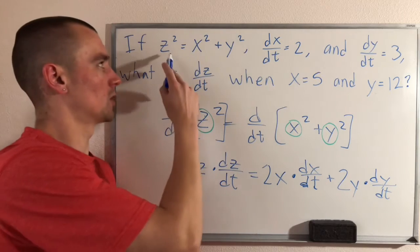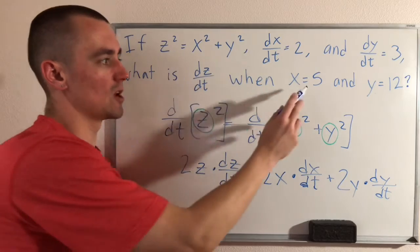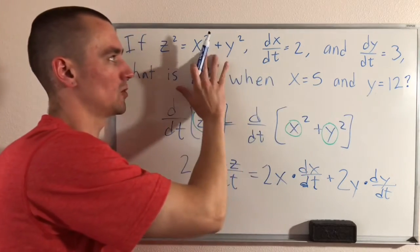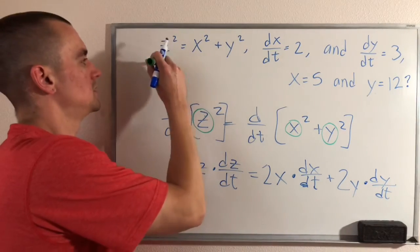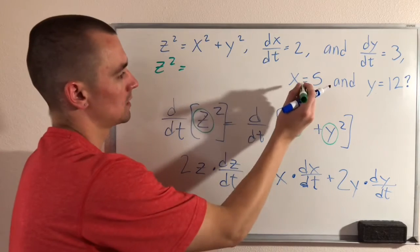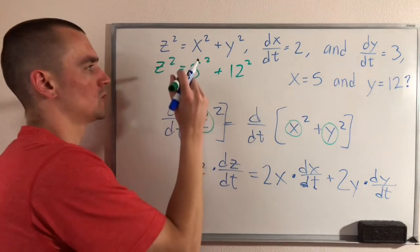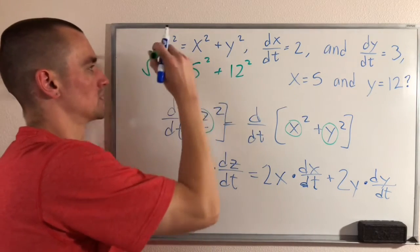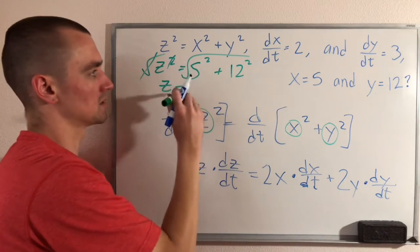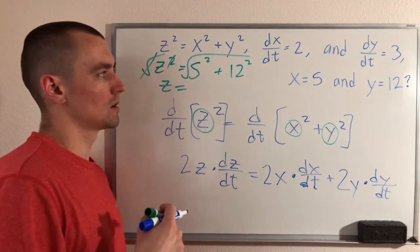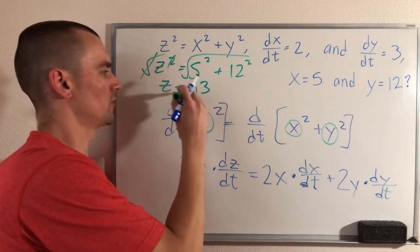To find z, we can actually just go back to our original equation. We know that x, y, and z are related like this. We know what x and y are, so we can plug these in to this equation and solve for z. So doing that is just going to give us z squared equals 5 squared plus 12 squared. 12 squared plus 5 squared, and then if we square root both sides, that'll cancel with the squared over here. And we'll just get z equals the square root of 5 squared plus 12 squared. If you plug that into a calculator, that'll just leave you with z equals 13.